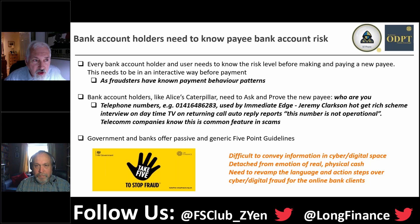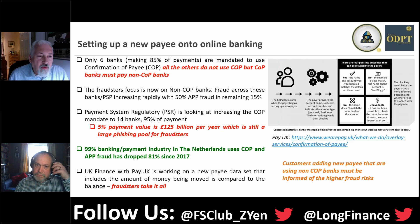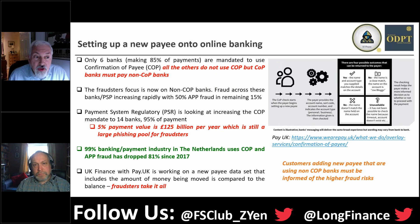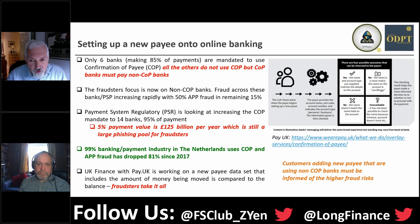We must mandate Confirmation of Payee. Only six banks use CoP, although they make up 85% of payments. Banks that do use CoP must pay to banks that don't — and fraudsters are moving to those non-CoP banks, which is 95% of all banks, to set up their accounts. They can then explain to victims 'our bank doesn't do that.' There are four possible outcomes illustrated in this diagram.